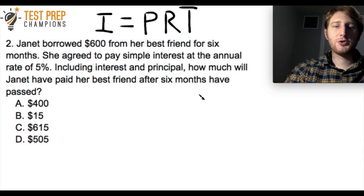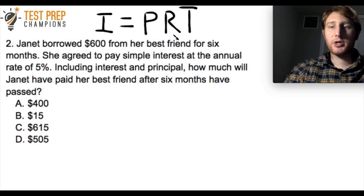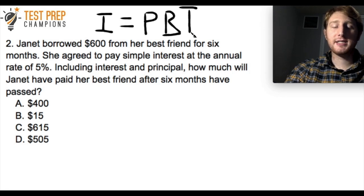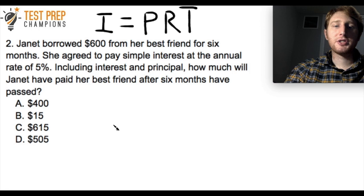In the simple interest formula I = PRT: P stands for principal — the starting amount of money. R is the interest rate, always expressed per year for the GED. T stands for time, always in years. Knowing this, we can solve. She borrows $600, so P = 600. The annual rate is 5%, so R = 5/100. Six months is half a year, so T = 1/2.